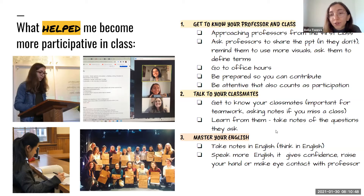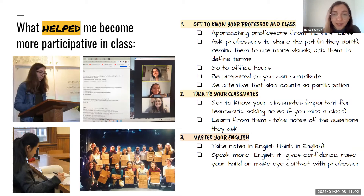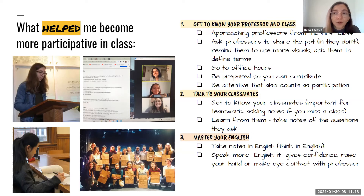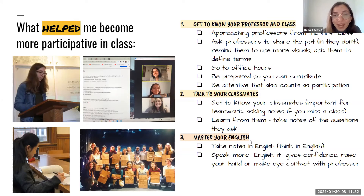Being comfortable with classmates also helps during group work. I would observe how they participate and what questions they ask, and learn from that. Then, mastering your English: take notes in English, think in English, speak more English. Lack of confidence when participating often comes from not being sure your English is good enough — maybe you have an accent or don't pronounce words correctly, but that's okay. Professors know they have international students, and nobody will judge you for that.